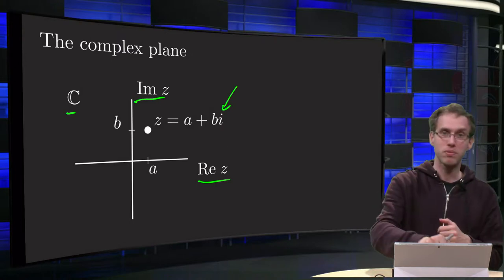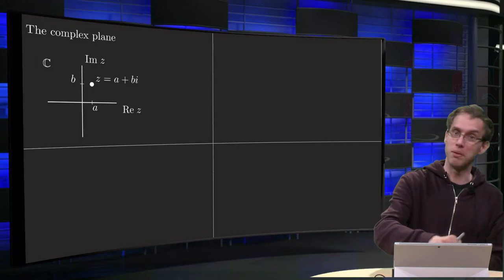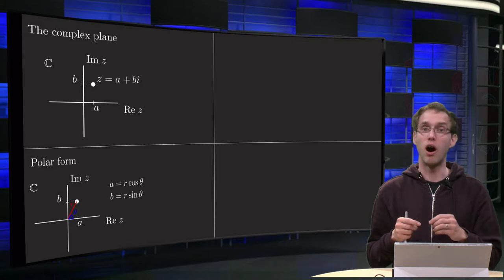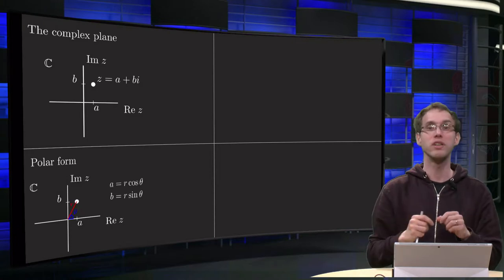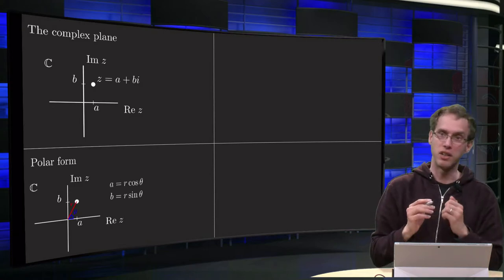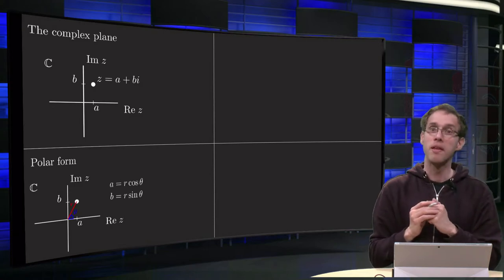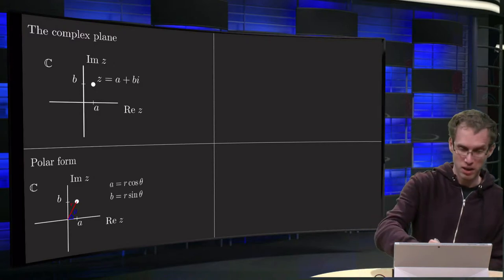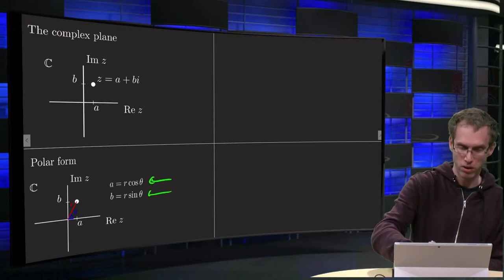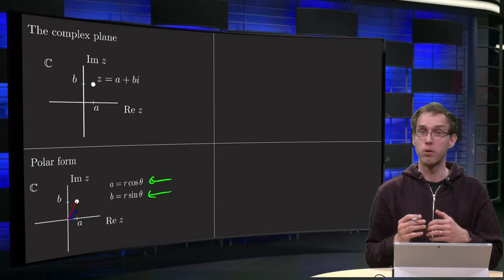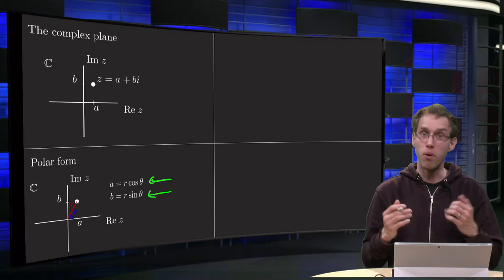Now for points in the plane you can use the Cartesian coordinates A and B, but you can also use the polar coordinates R and theta, where R is the distance from the origin to the point and theta is the angle with the positive x-axis, as in the figure. We can do that for complex numbers as well — we have the same formulas: A equals R cosine theta and B equals R sine theta. This way of viewing a complex number with polar coordinates is called the polar form.